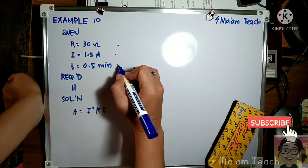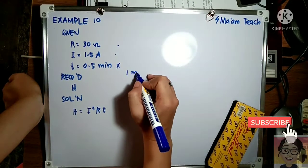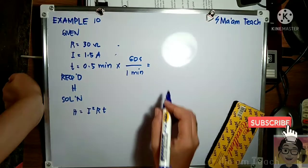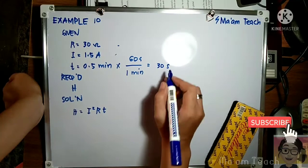In order to use this, we have to convert first our time from minutes into seconds. In one minute there are 60 seconds, so this will be 30 seconds.